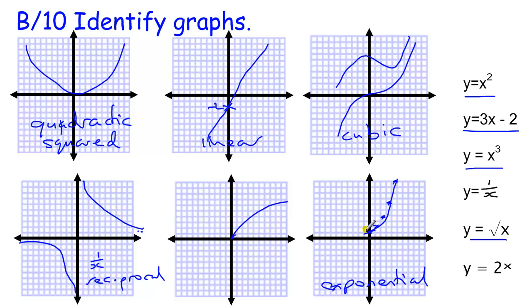And then as x gets smaller and smaller, the negative values, it actually tends towards 0. It doesn't get there again. This is another asymptote. And it only has positive values. You can't have any negative values down here. So that curve there is an exponential graph.